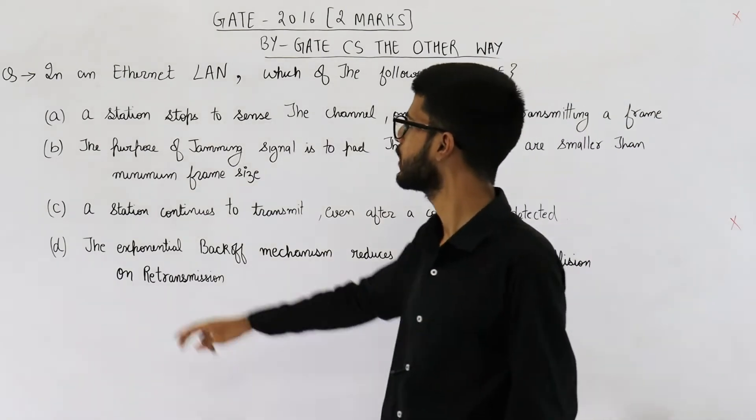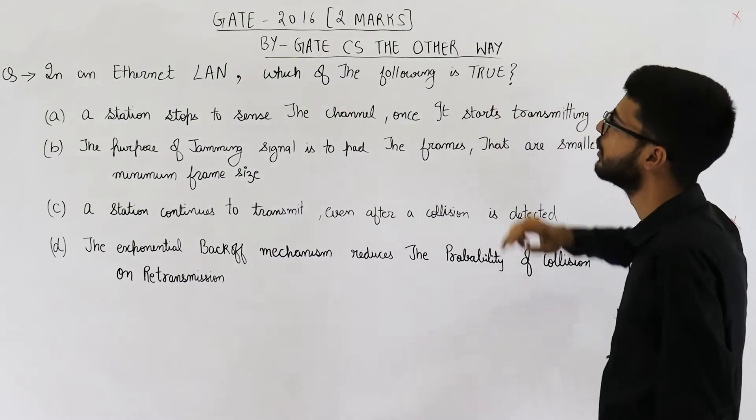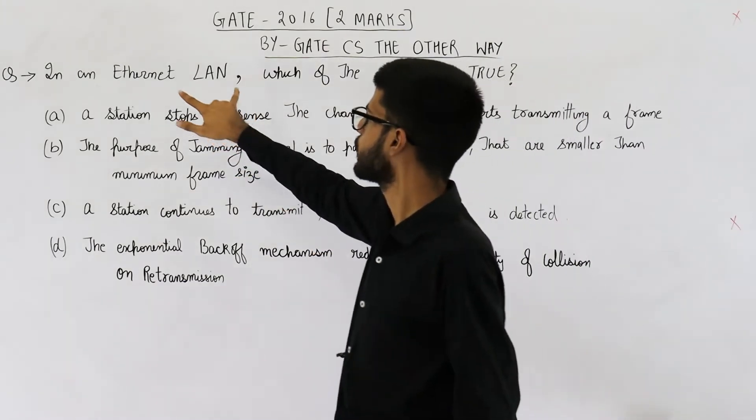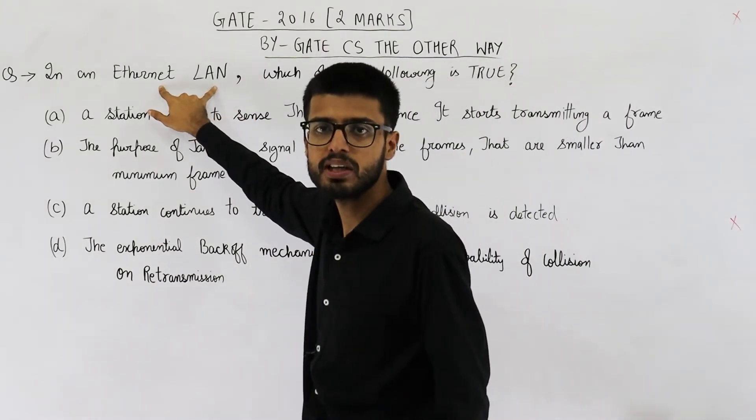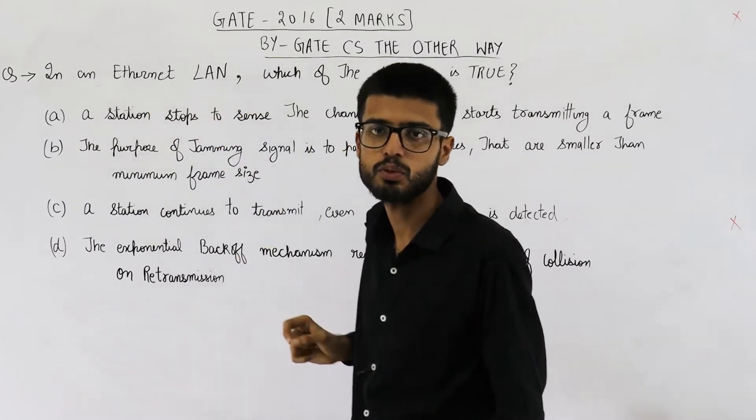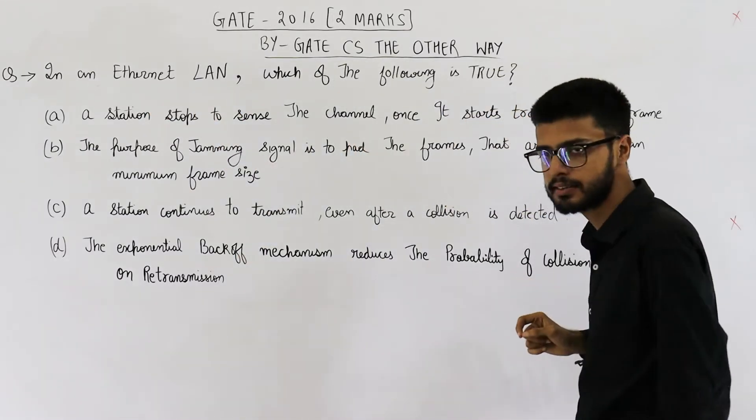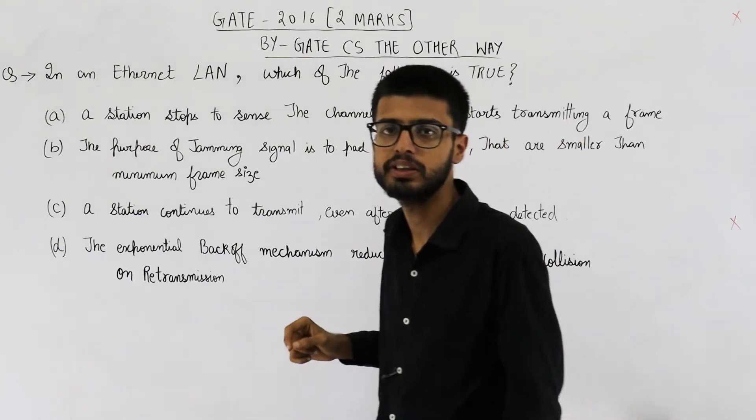They are asking in an Ethernet LAN which of the following is true. So they are talking about Ethernet LAN. That means we are using CSMA CD. CD stands for collision detection. Carrier sense multiple access collision detection.